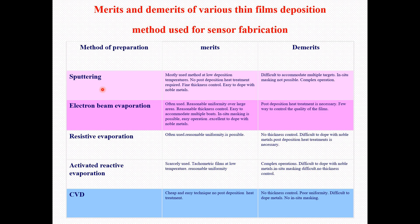Starting with sputtering: we can utilize sputtering techniques for sensor fabrication. The advantages are that it is mostly used at low deposition temperatures, no post-deposition heat treatment is required, fine thickness control, and easy to dope with noble metals. These are the merits or advantages when we utilize the sputtering technique for sensor fabrications.